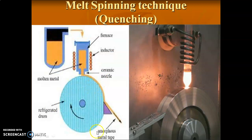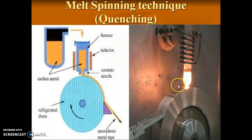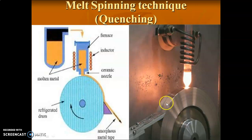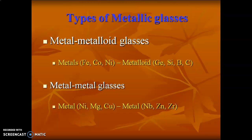In the melt spinning process, the experimental setup has a roller placed over a crucible filled with metal and glass. It is heated at high temperature using a furnace. There is a very fine nozzle hole — when the raw material is completely melted, it is poured through the small nozzle and made into glass ribbon sheets. This is how metallic glass is prepared using the melt spinning technique.